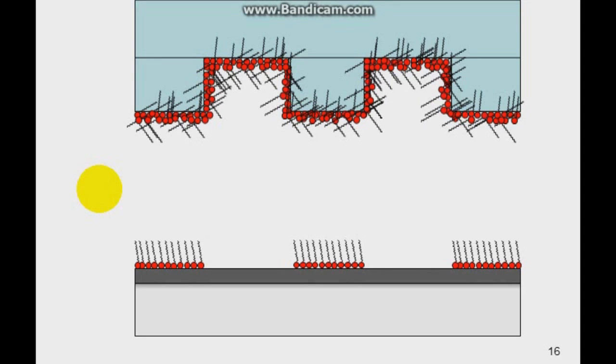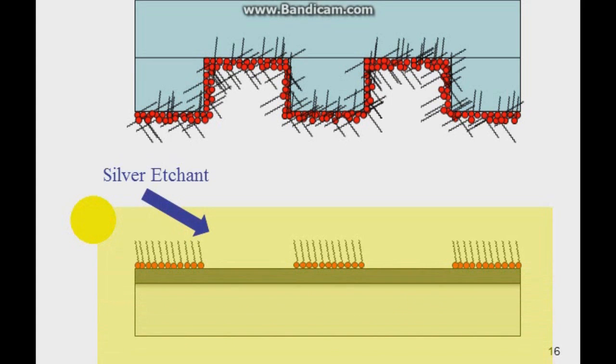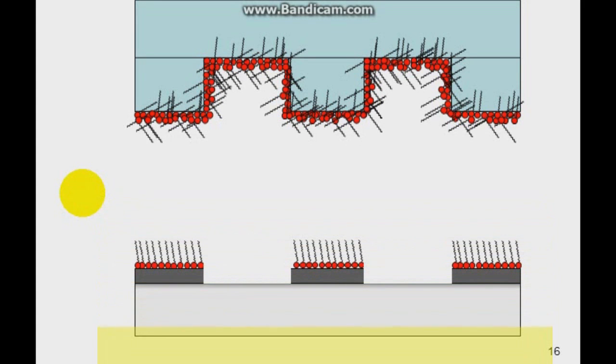Once these thiol molecules have been attached on the silver surface, it will create a region that we call as the protected regions. To finish this process, it would be desirable to remove the unprotected regions of the silver surface. To do this, we need to add an etching solution, a silver etchant that is usually a strong acid or a mordant that can remove the unprotected regions. Once these unprotected parts have been removed, we finally obtain the surface with the pattern that we wanted earlier.